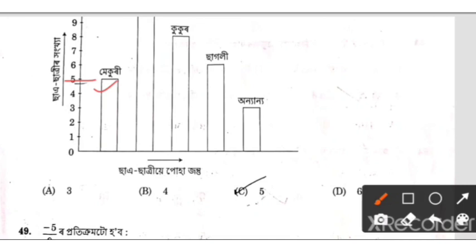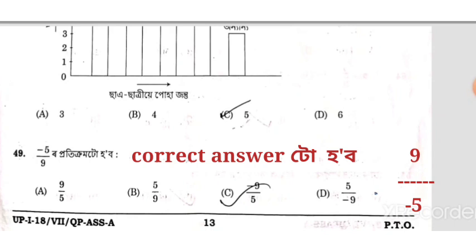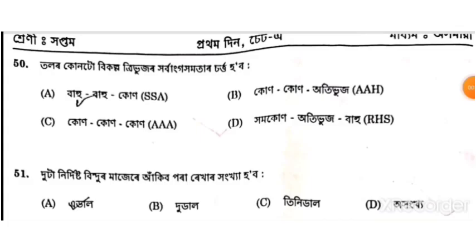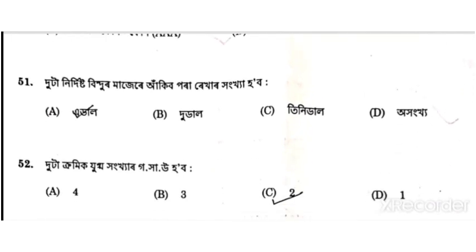The correct option for question 47 is option C, five. Question 49: 10 minus 5 by 9. For the triangle congruence condition, the correct option — question 51 covers everything.